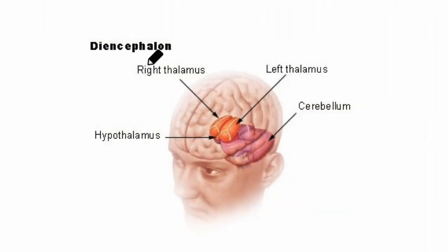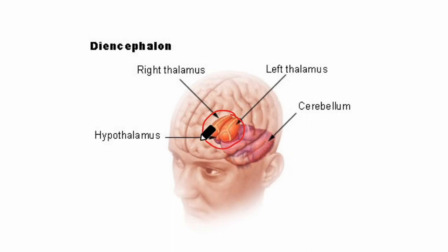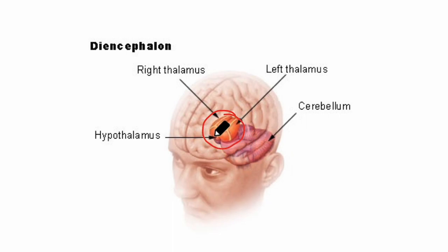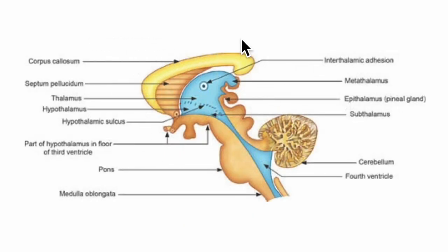To begin with, the diencephalon forms a part of the forebrain. It is a middle structure which is largely embedded inside the cerebrum, as you can see right here. In this diagram you can see the sagittal cross section of the third ventricle, the fourth ventricle, the cerebral aqueduct and the structures of the brainstem — that is the midbrain,